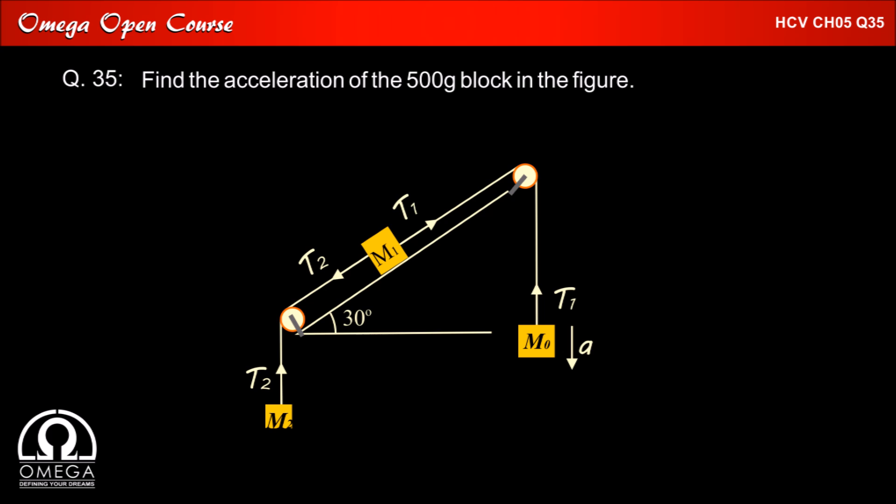Also, if we assume the acceleration of M0 to be downwards, blocks M1 and M2 will move with the same acceleration: M1 up the incline and M2 upwards.